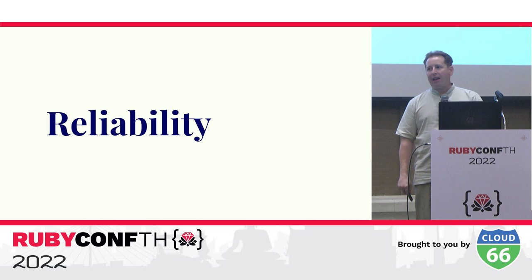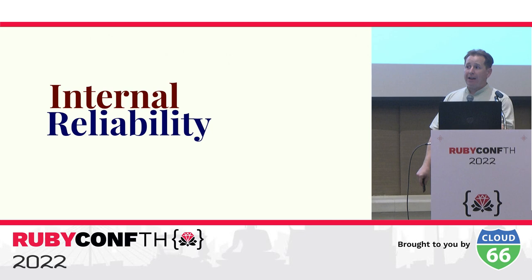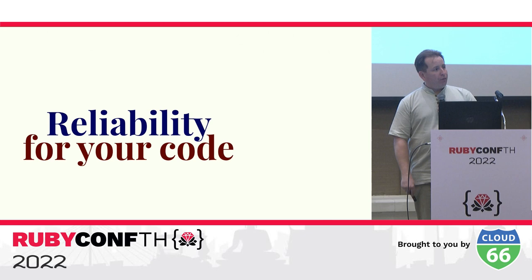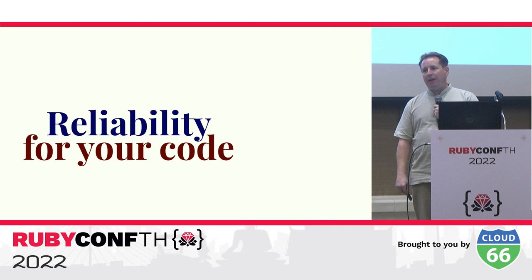Now I'll talk about reliability. One way to look at reliability is in terms of the framework itself being reliable — internal reliability. Part of Roda's reliability comes from the fact that it has 100% line and branch coverage for all code. While internal reliability is important, it's probably more important that your framework allows you to write more reliable applications, and Roda has two features that result in your applications being more reliable.